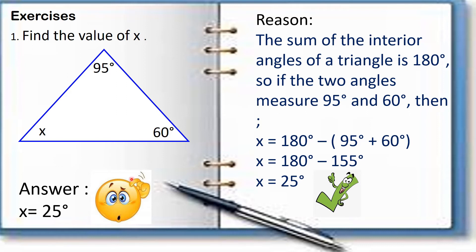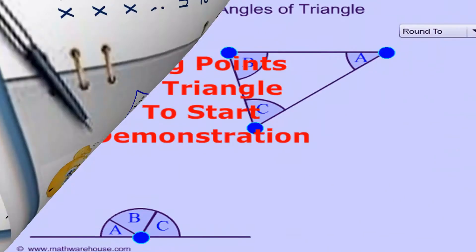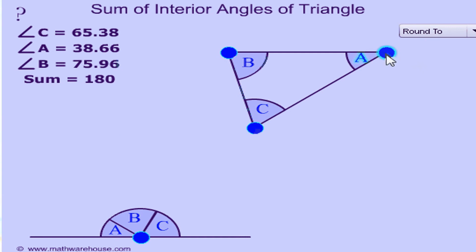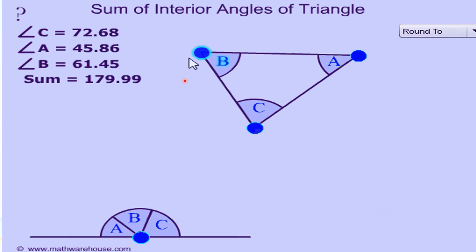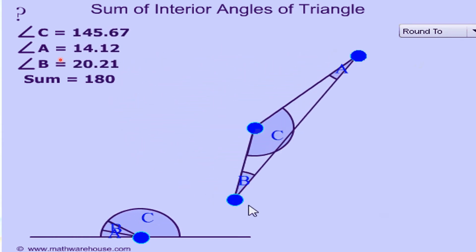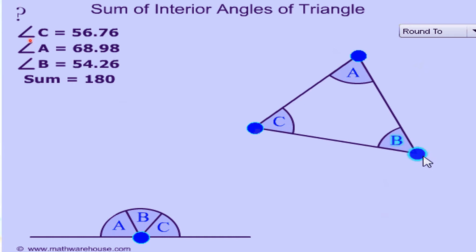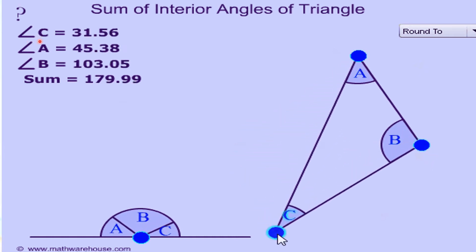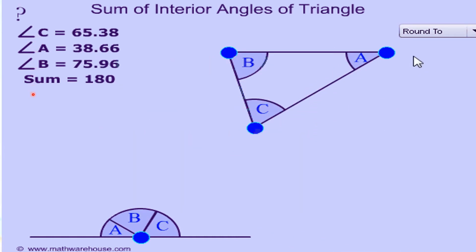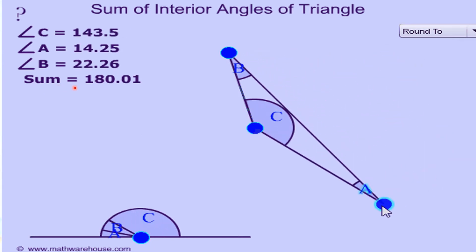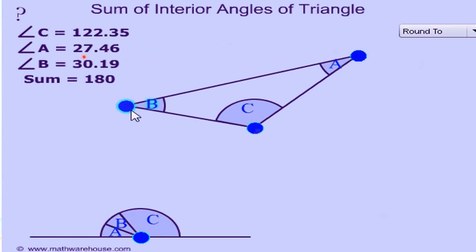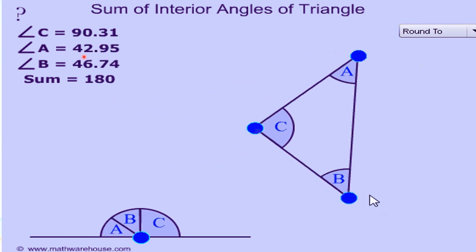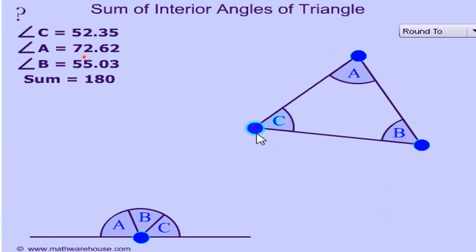To check: 25 degrees plus 95 degrees plus 60 degrees equals 180 degrees. So our answer is correct. Observe that no matter what type of triangle it is, the sum of its three interior angles is always 180 degrees.